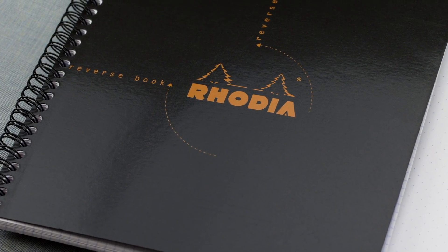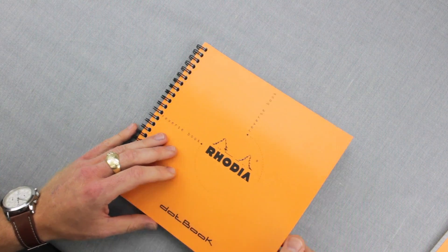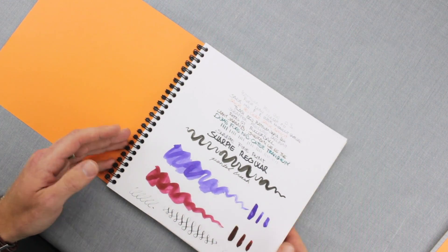What Rhodia is going for here, the layout of the notebook is eight and a quarter by eight and a quarter. So when you open it up, it's really meant to be used any way.